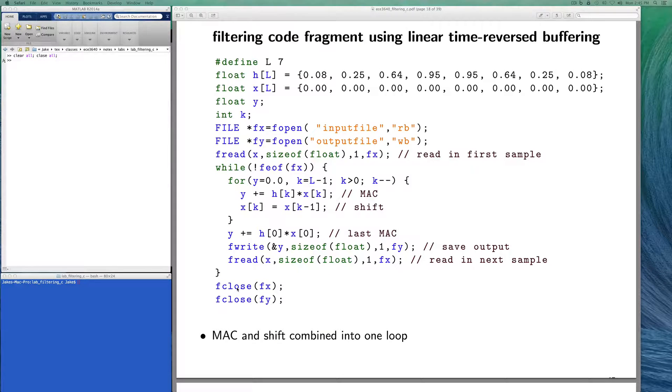This code fragment is accomplishing the same thing, but we have combined the multiply-accumulate and the shift into a single loop where we start at the end and work our way from the end back towards the beginning. We exit the loop before we get to the k equals 0 iteration. In that case, we don't want to shift anymore. We just want to do the last multiply-accumulate operation, and then we write out the sample, read in the new sample.